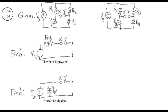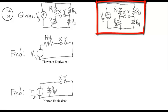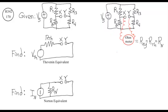Let's start by finding the Thevenin resistance — that means finding the resistance between points X and Y. We can imagine connecting an ohmmeter between points X and Y. However, we can't do it now because there's a voltage source in the circuit. We cannot connect an ohmmeter to an energized circuit in this method, and we cannot connect an ohmmeter to an energized circuit on the lab bench either. We must remove all voltage sources and all current sources before connecting the ohmmeter.